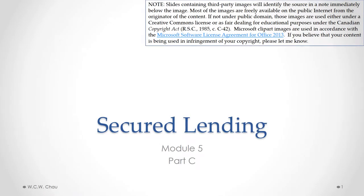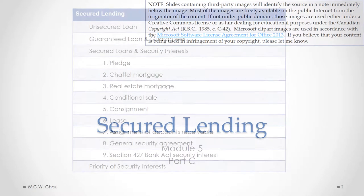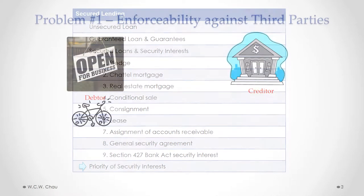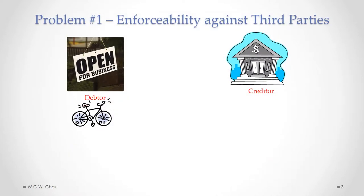Hello, it's Waylon Chow, and this is Secured Lending, Module 5, Part C. In this part, we will look at the priority of security interests. Before we talk about the actual public registration systems, let's try to first understand the two problems that these registration systems are meant to address.